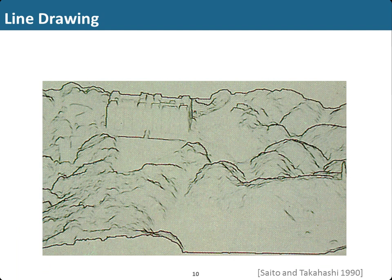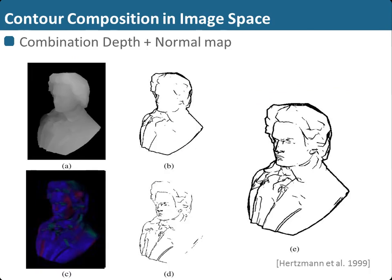The start of illustrative visualization can perhaps be dated to 1990 with the work of Saito and Takahashi, where they analyzed the depth map and the normal map and came up with a line-drawing abstraction mimicking the abstraction of a polygonal scene. Here we can see how, from a depth map and a normal map, we can identify discontinuities in these two maps and derive certain lines which, put together, produce a line-drawing style. This was shown in a SIGGRAPH course on non-photorealistic rendering from 1999.